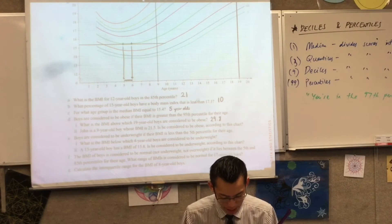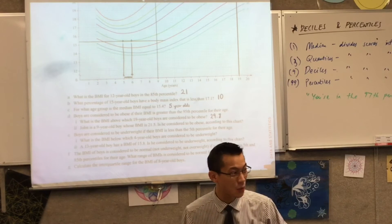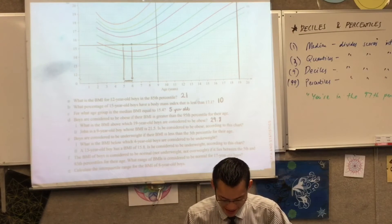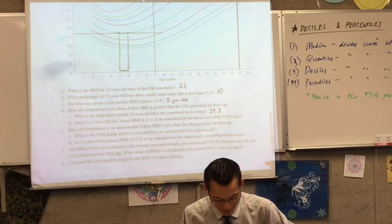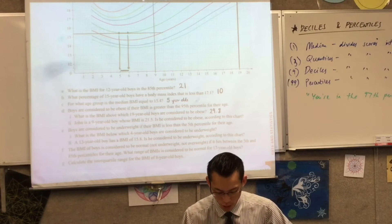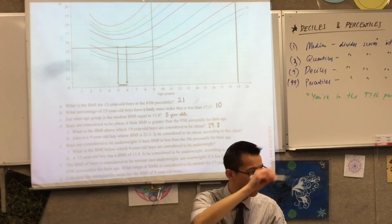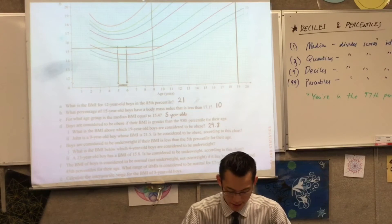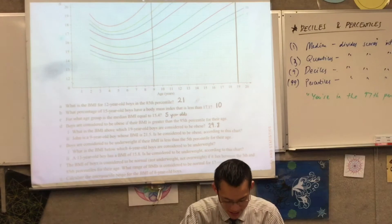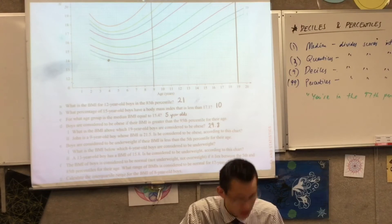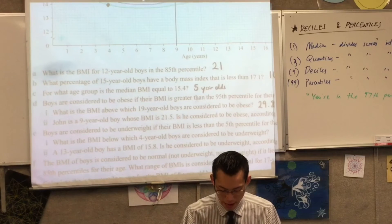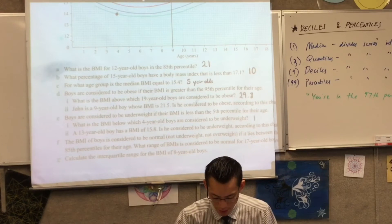Part E asks the same thing but in reverse — they're looking for underweight. So rather than looking above a certain line, we're looking below. What's the BMI below which four-year-old boys are considered underweight? The 5th percentile is the lowest curvy line. It looks like it's right there — pretty much bang on 14. So if you've got a BMI below 14, that would be classified as underweight.